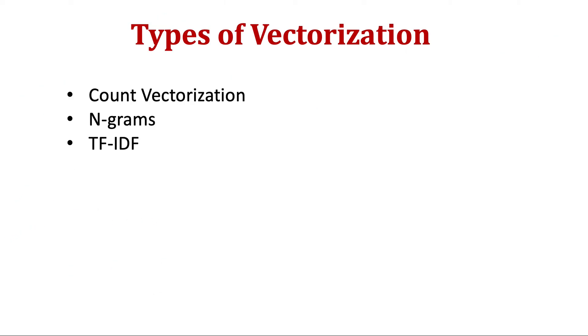So the other types of vectorization are count vectorization we already saw, then we have n-grams, and then we have TF-IDF which stands for term frequency inverse document frequency. So we will see all of these in further videos. And in the next video we will see how to use count vectorization that is included in NLTK package. So see you in the next video. Thank you.